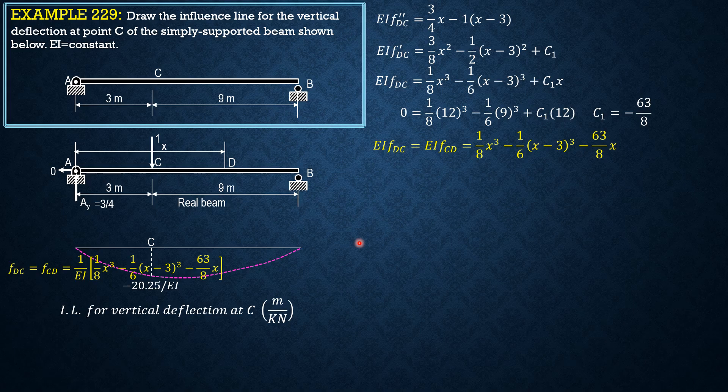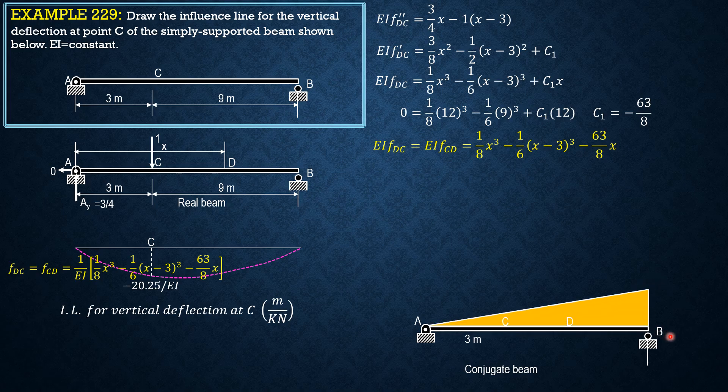Then by conjugate beam method, here is the conjugate beam. 3 fourths times 12 is 9 over EI. Then 1 times 9, so 9 over EI also for the load. First let's solve for theta A.